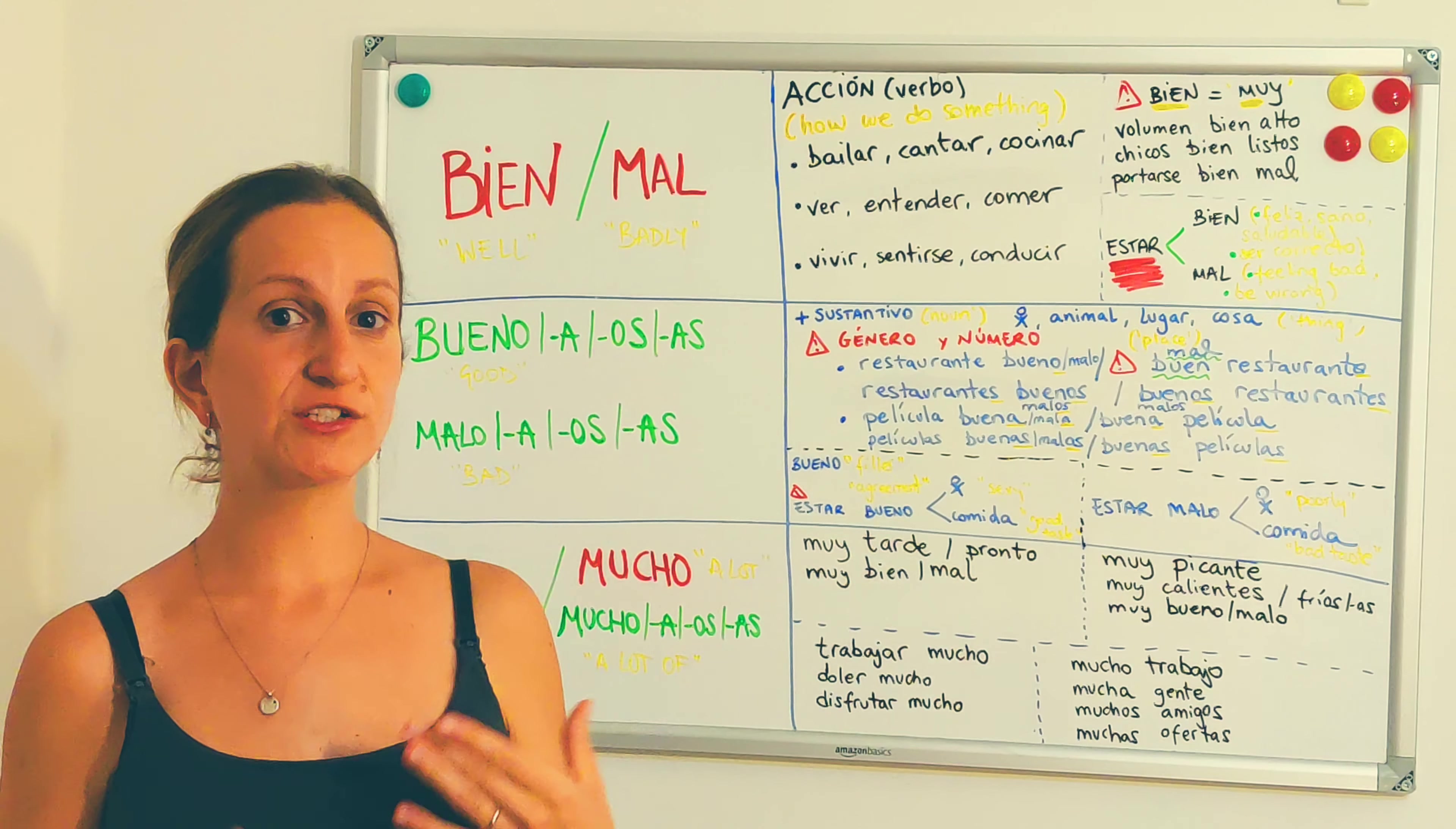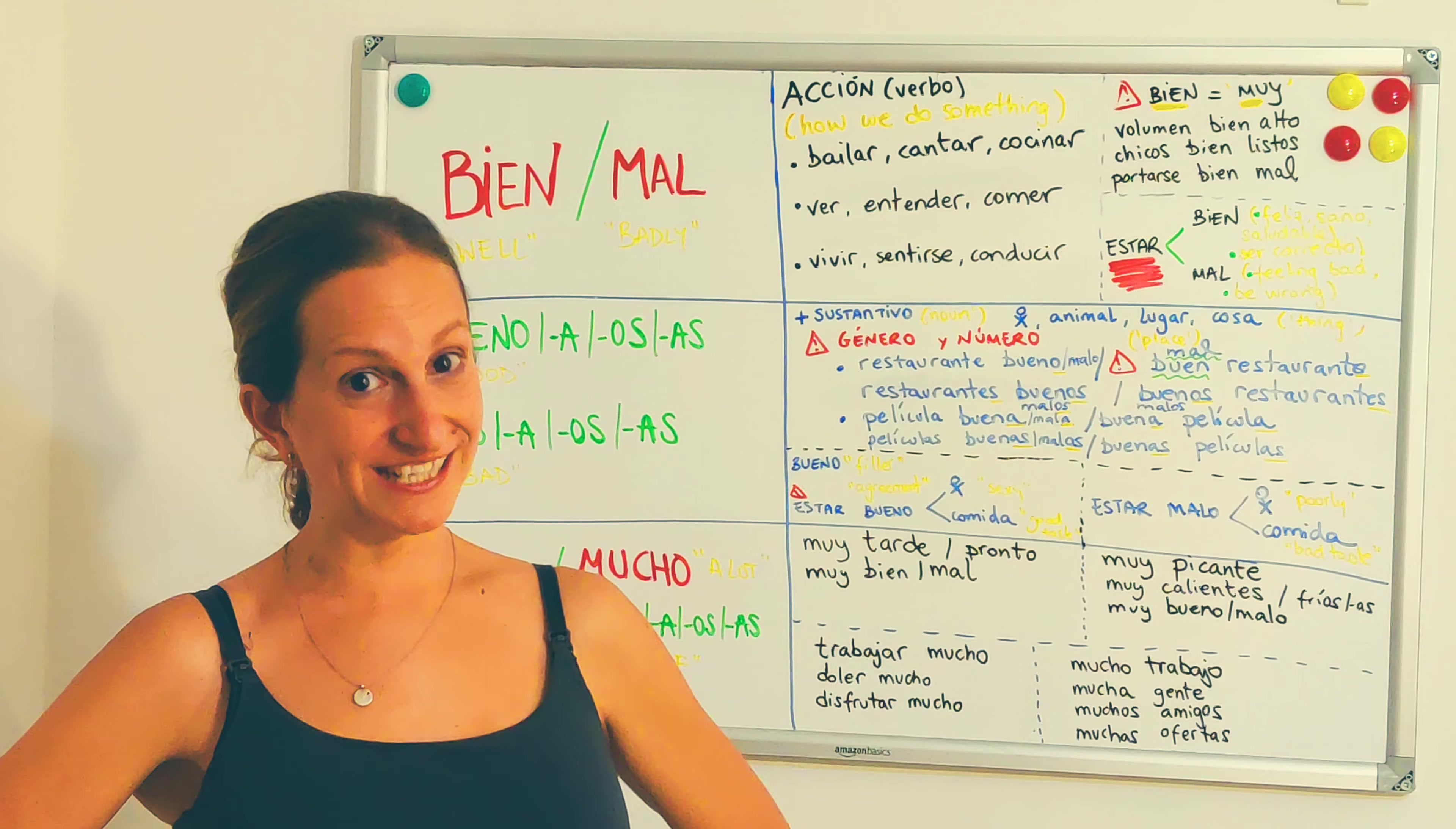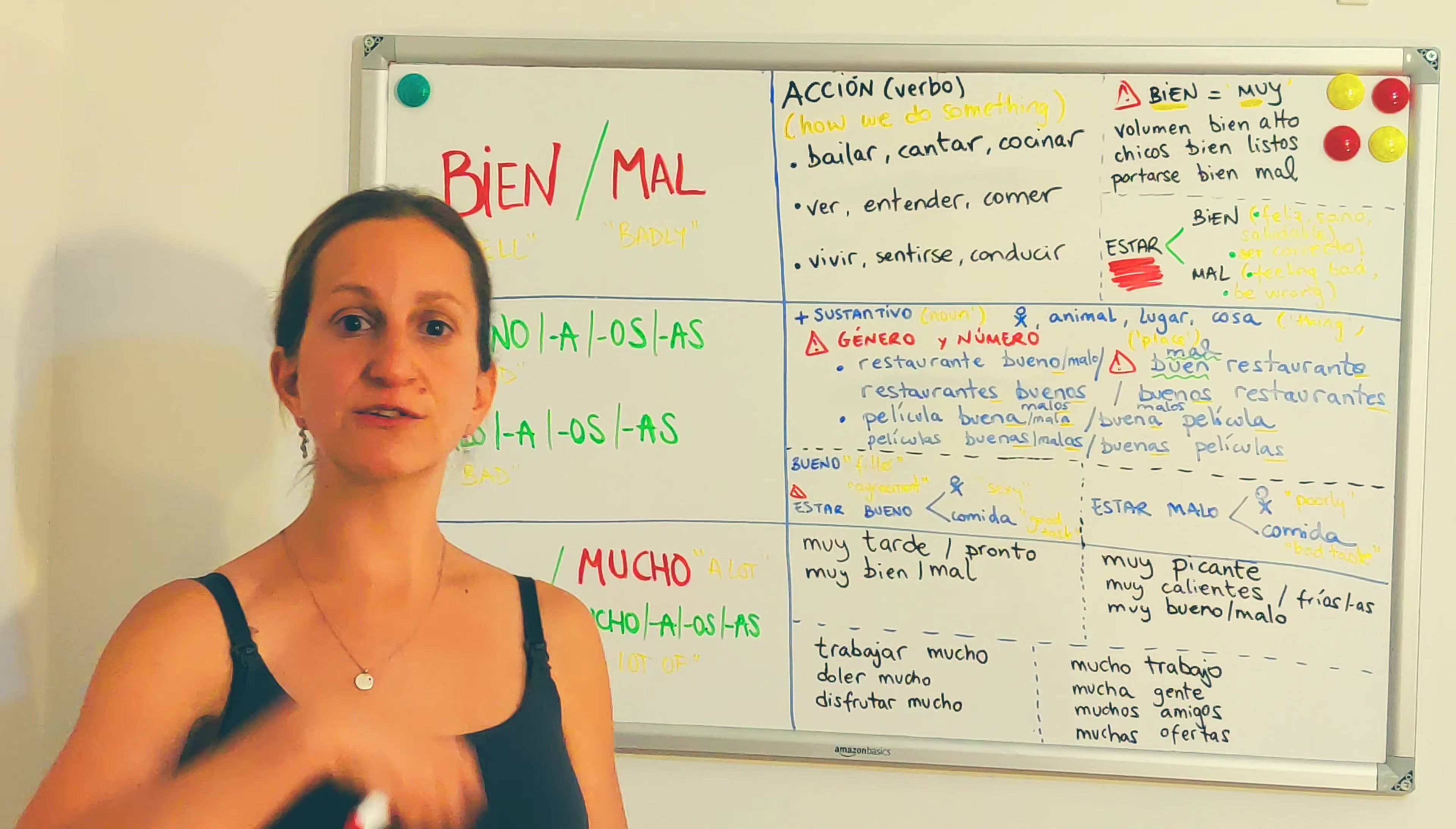And with the verb to be, estar. Watch out. This is quite interesting. So when we say, como estas, estoy bien. If you say, estoy bueno o estoy buena, because I'm a girl, I'm feminine, I'm saying, I'm sexy, I'm attractive. So, estar bueno o estar buena es ser atractivo, una persona atractiva, una persona sexy, vale? Para comida, si la comida está buena, it means that it's got a good taste, that it's something that you can eat, that is really nice, good taste.